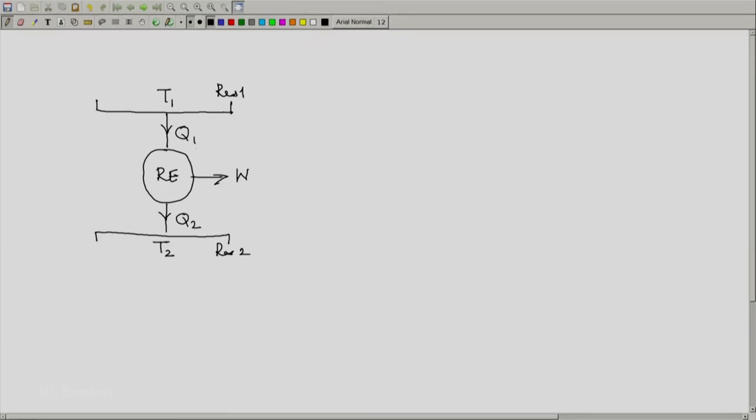Notice that this is a reversible engine, a Carnot engine. And hence for every cycle, the delta S of this reversible engine per cycle will be 0. But let us evaluate this and we will notice that this is 0, but it should also be equal to...